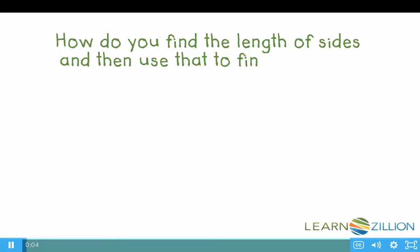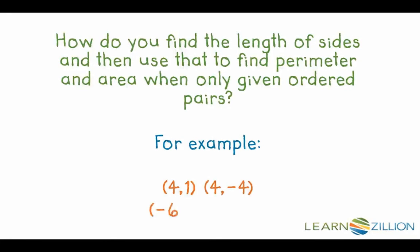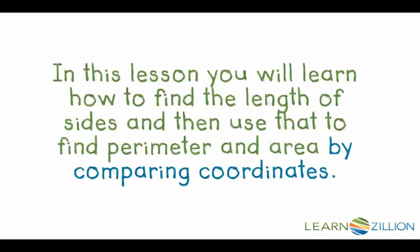How do you find the length of sides and then use that to find perimeter and area when only given ordered pairs? In this lesson you will learn how to find the length of sides and then use that to find perimeter and area by comparing coordinates.